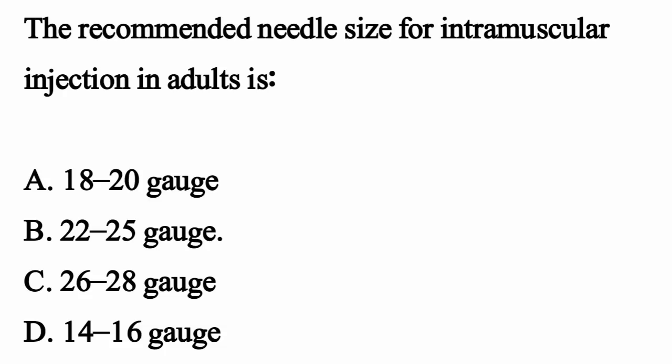The recommended needle size for intramuscular injection in an adult is — the correct option is Option B, 22 to 25 gauge.